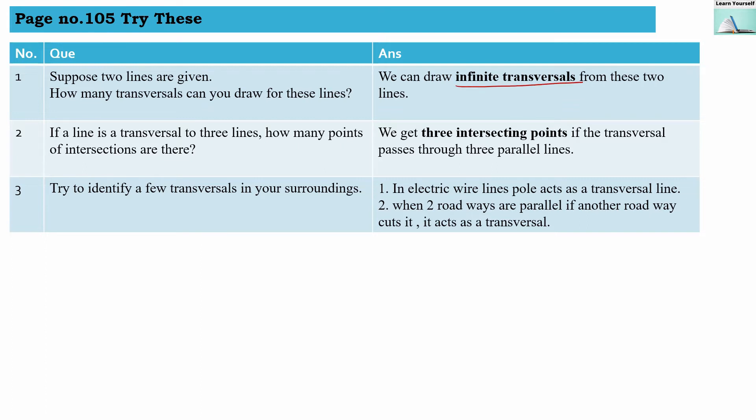Suppose two lines are like this, this is line L and this is line M. So we can draw many transversals from this, all these lines T1, T2, and T3, they are transversals and we can draw infinite transversals from two lines.